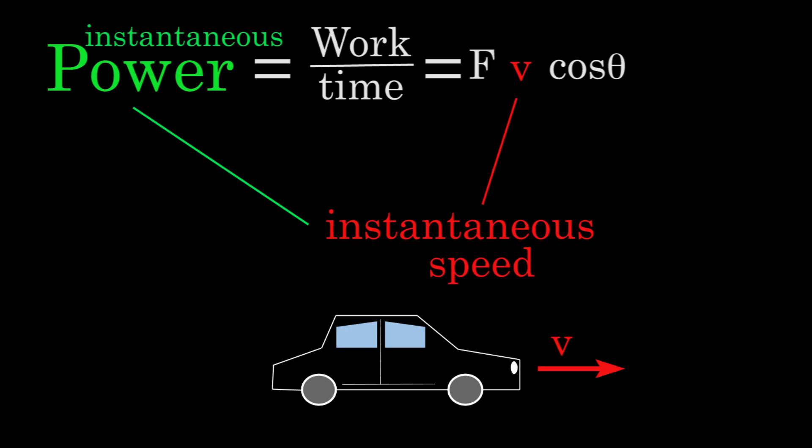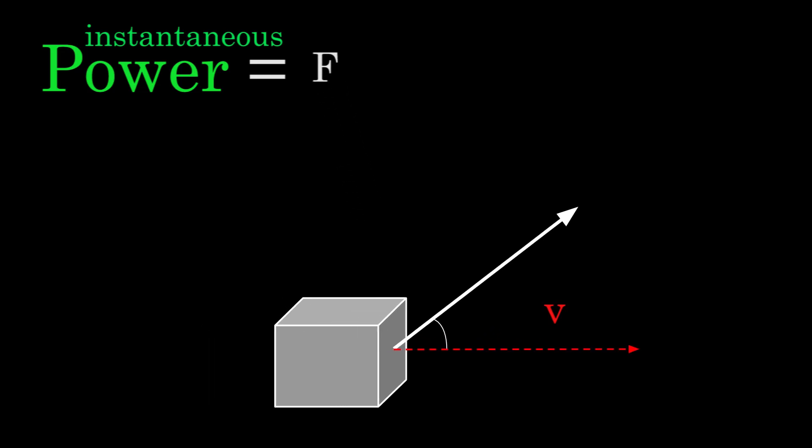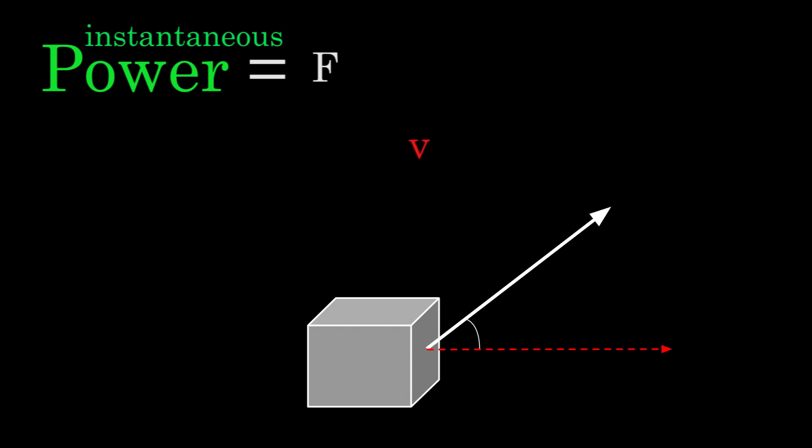So to find the instantaneous power output by a force, plug in the force on the object at a particular moment in time, multiply by the speed of the object at that same moment in time, then multiply by cosine theta. But be careful here, theta isn't any old angle. It's the angle between the force on the object and the velocity of the object.